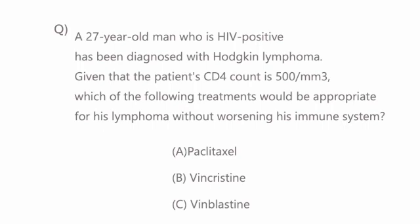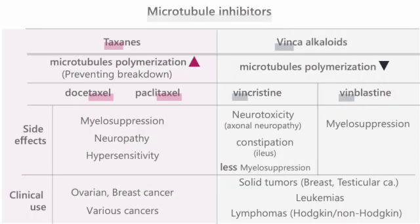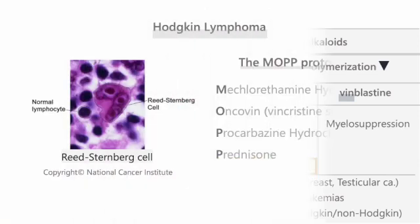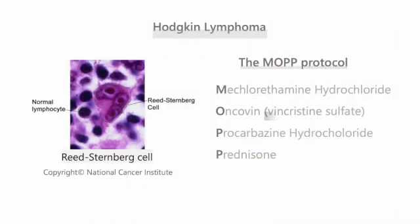Question 1: A 27-year-old man who is HIV-positive has been diagnosed with Hodgkin lymphoma. Given that the patient's CD4 count is 500 per cubic millimeter, which treatment would be appropriate for his lymphoma without worsening his immune system? Vincristine is not typically associated with bone marrow suppression, making it a favorable choice. Vincristine is included in the MOPP regimen for Hodgkin's disease.